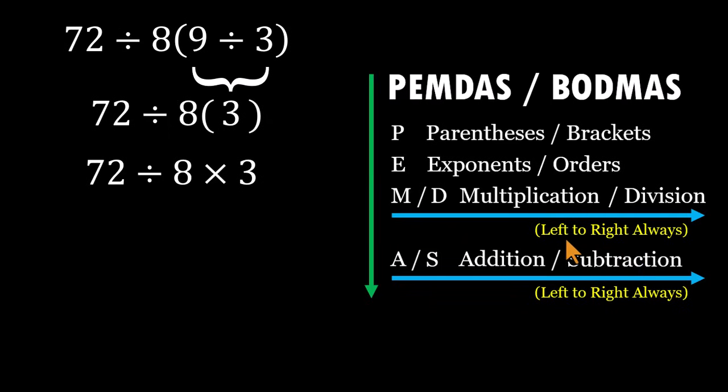So let's do it properly. Start at the far left. 72 divided by 8 equals 9. Now bring the 3 down. 9 times 3 equals 27. That's the correct answer.